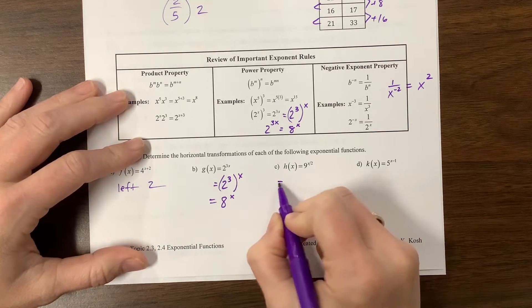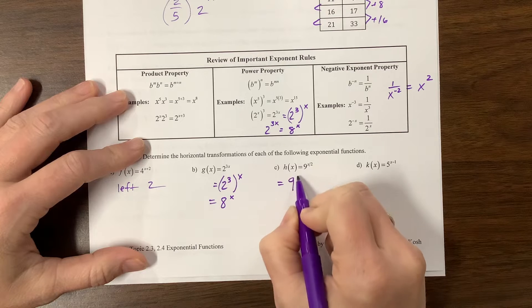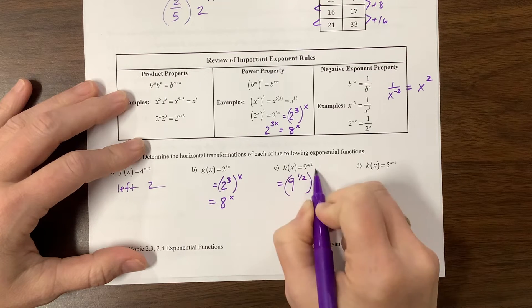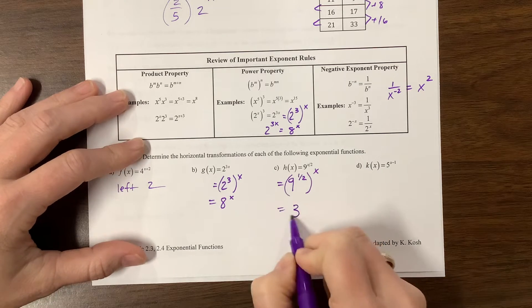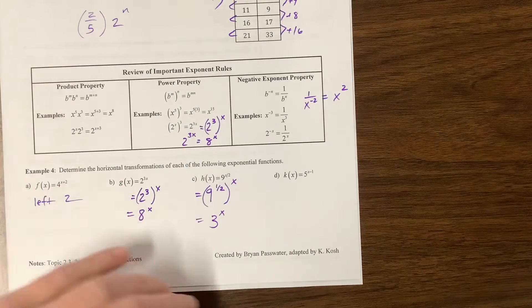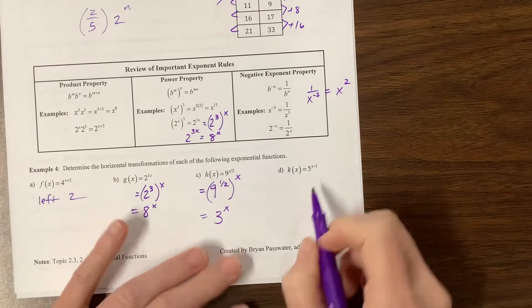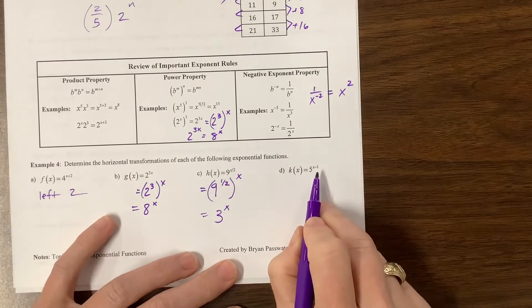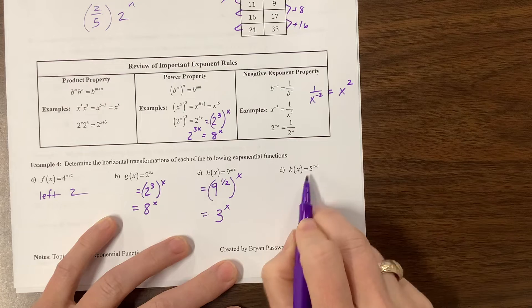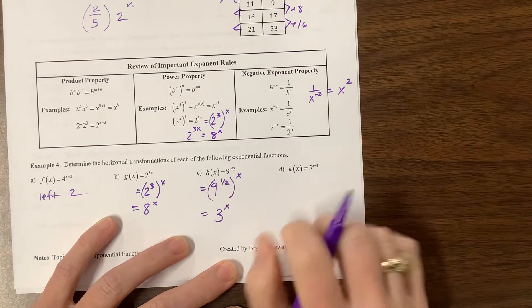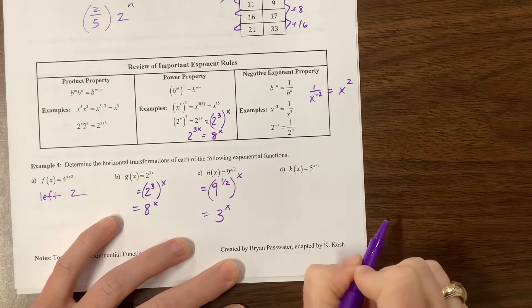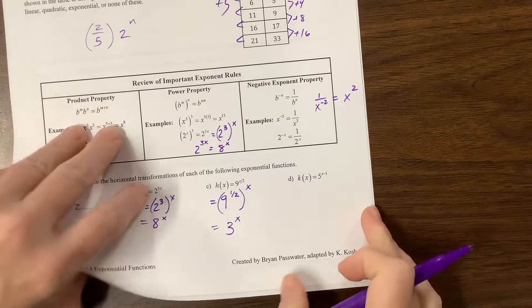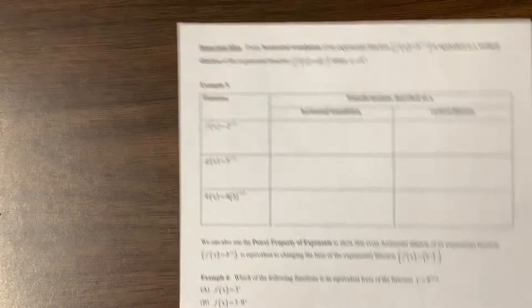This one is going to be a horizontal stretch by a factor of 2. But it could also be written as 9^(1/2) raised to the x power. Well, 9^(1/2), it's the square root of 9, is 3. This is 3^x, which is kind of cool. That's a side note. Here we go. Another one here, this can be written as a horizontal shift, it's going one unit to the right. Okay, here we go.